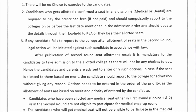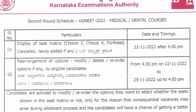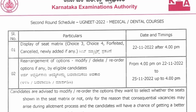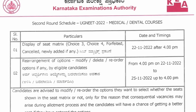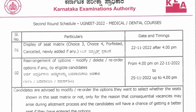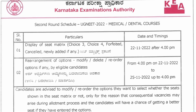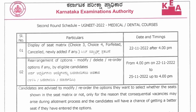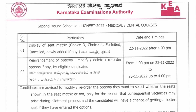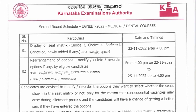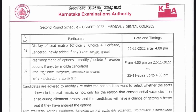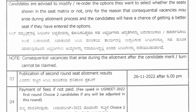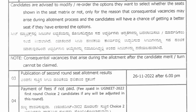The seat matrix will be published tomorrow after 4 PM. Your option entry window will be open from 22nd November to 25th November. You are advised to modify or reorder the options you want to select based on whether the seat is shown in the seat matrix. The second round seat allotment result will be published on 26th November after 6 PM.